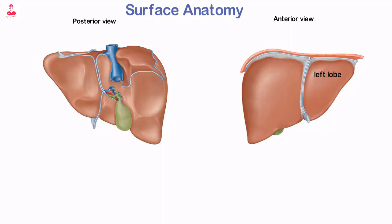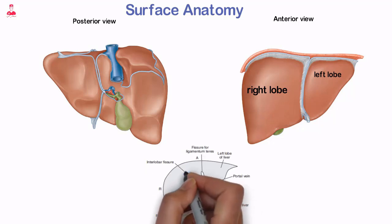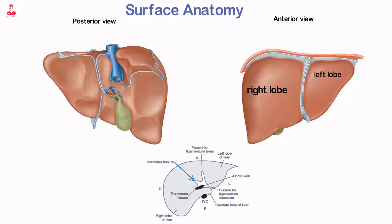The left lobe is the most anterior of the liver lobes, extending across the midline. The right lobe is the largest of the four lobes and is separated from the left lobe by the interlobar fissure. The smallest lobe is the caudate lobe, which is located on the inferior and posterior liver surface, sandwiched between the IVC and the ligamentum venosum.